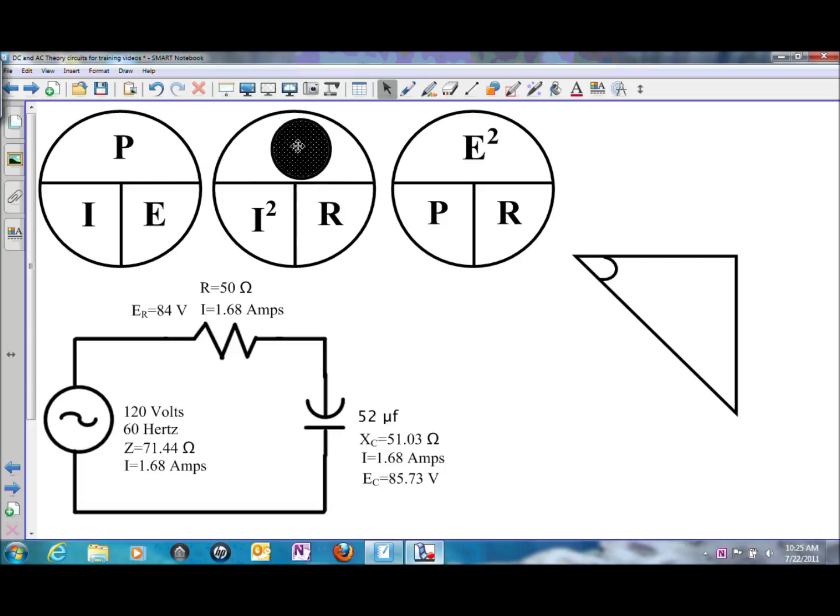We could use I squared times R, possibly at the resistor, the current squared times the value of resistance for the wattage. And the last one, we could use the capacitive voltage drop squared divided by the value of capacitive reactance to get the reactive power or the VARs.